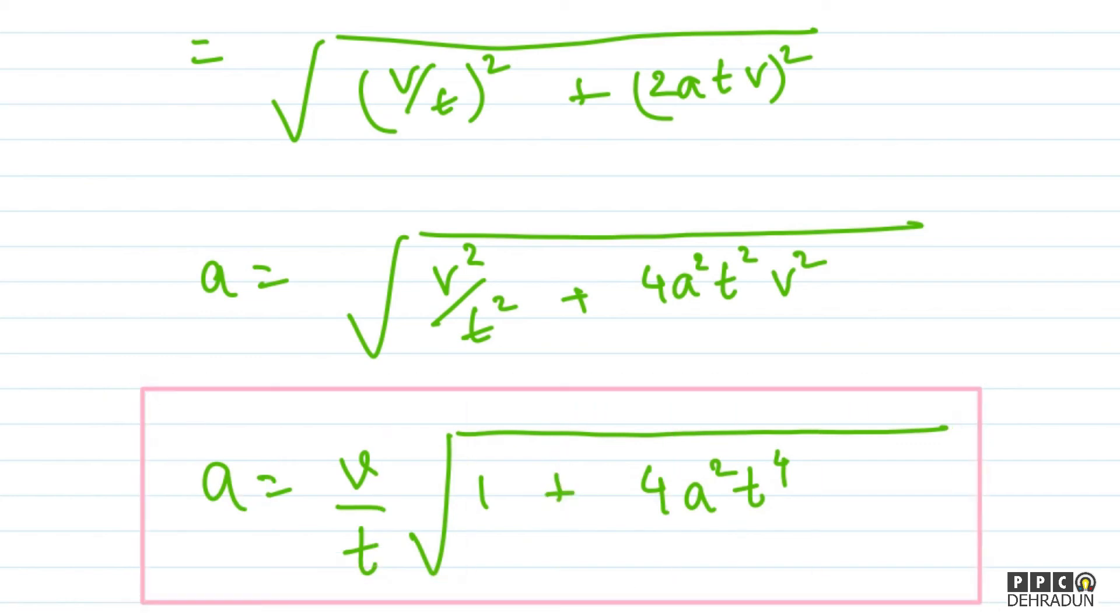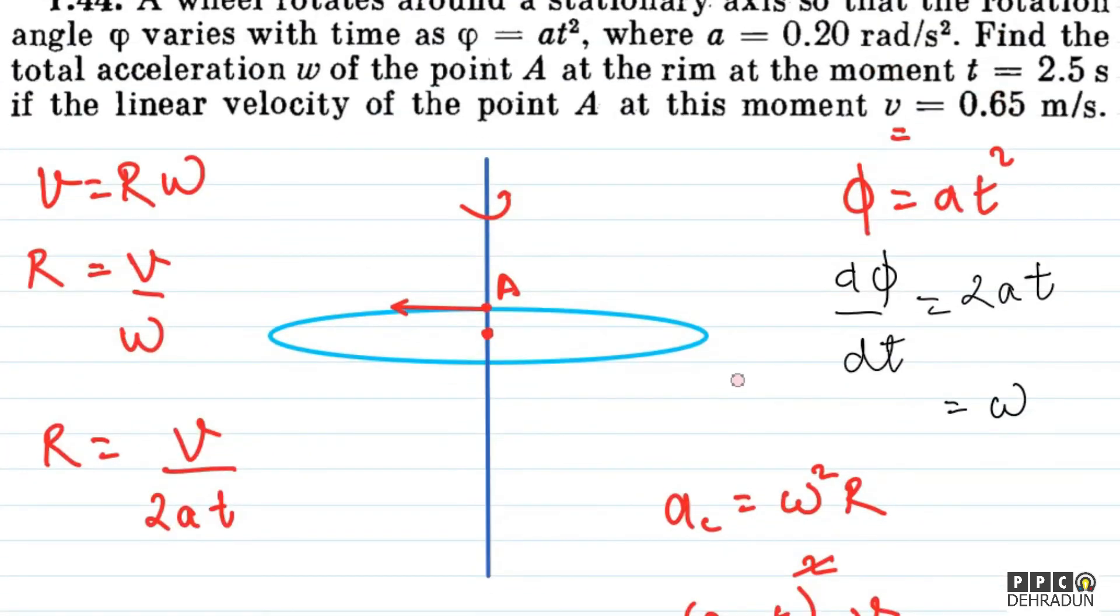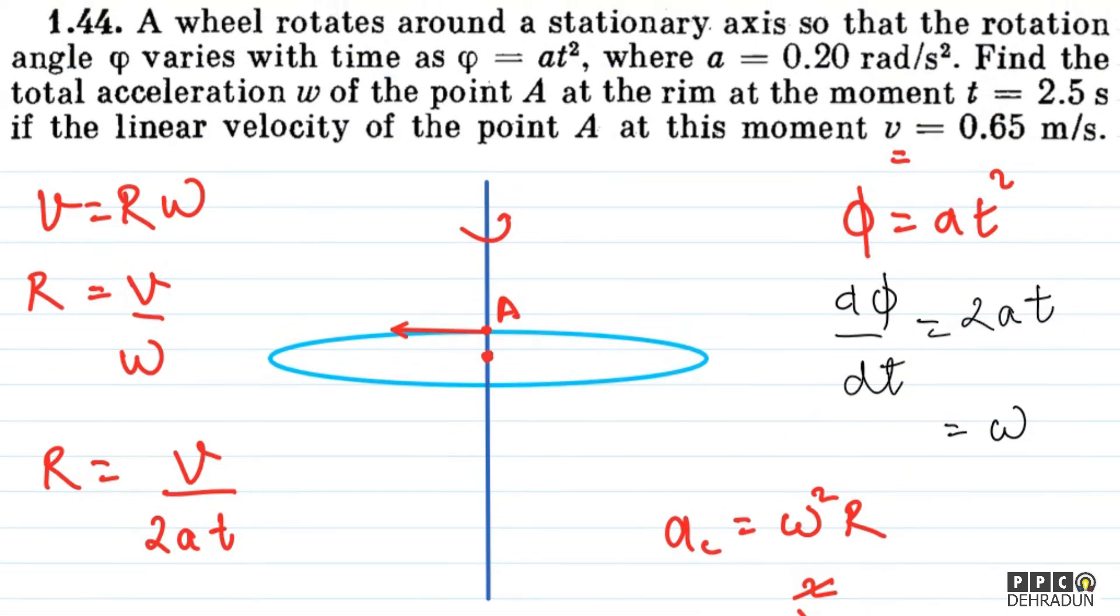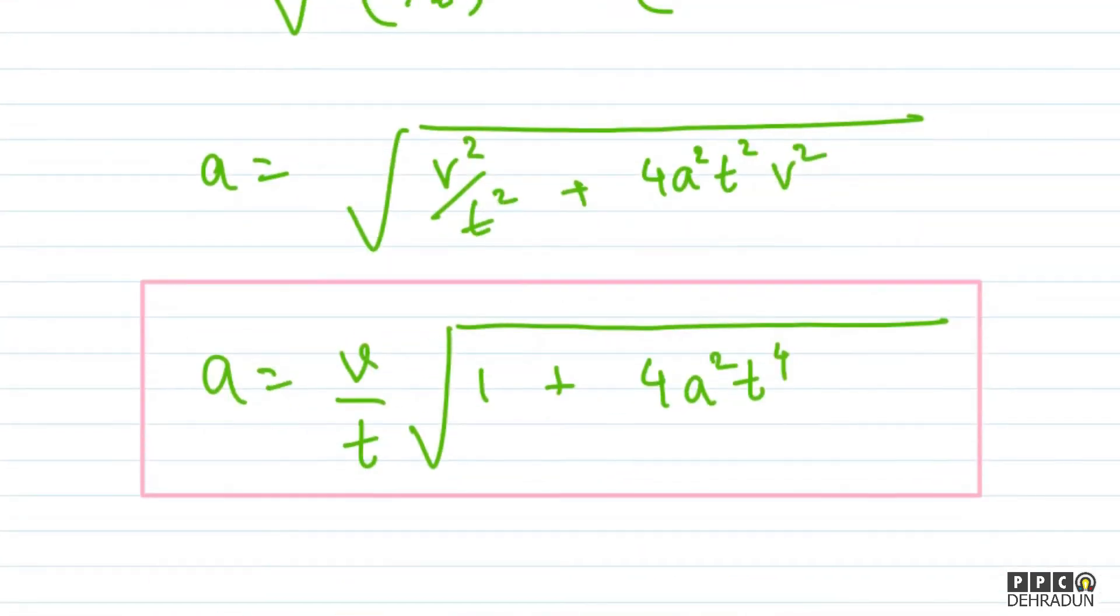To summarize: we have the wheel with fixed radius, we found v and radius, then calculated centripetal acceleration and tangential acceleration, and finally the resultant net acceleration. I hope you understood. In case of any questions, feel free to contact me. I'll be very happy to help you. Take care, bye bye.